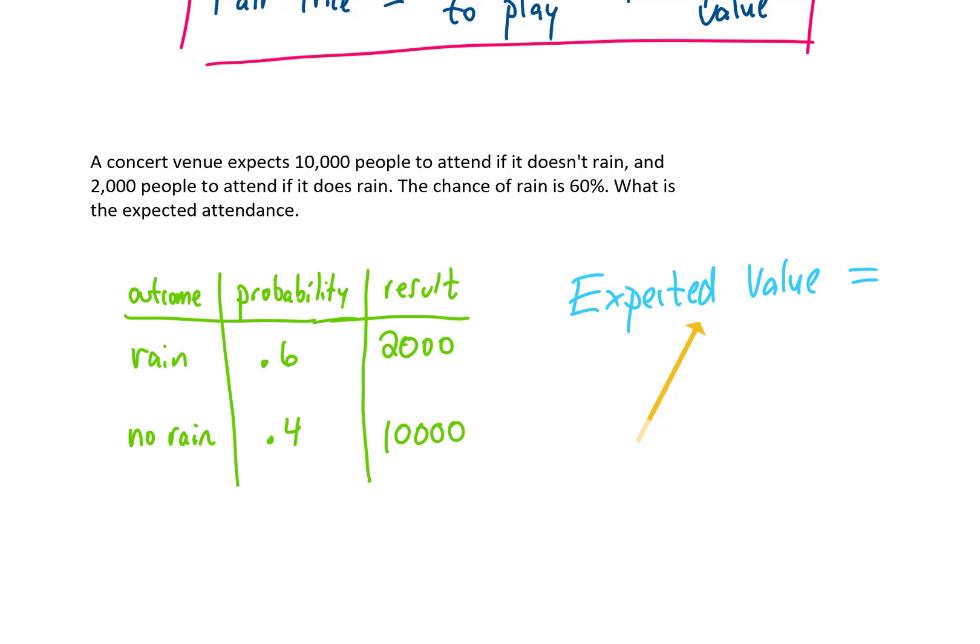To calculate the expected value, we take each result and multiply it by its corresponding probability. We add those answers together. And when I do that, I get 5,200 attendees. Now that is the answer.